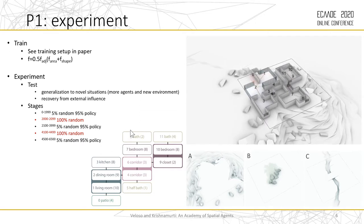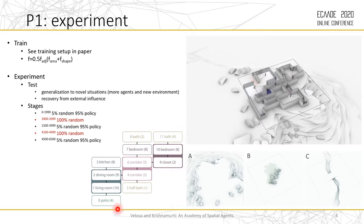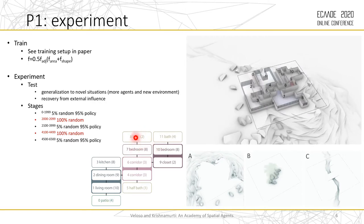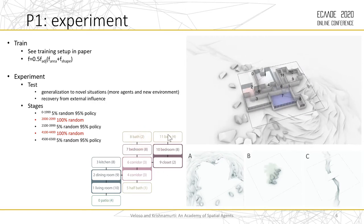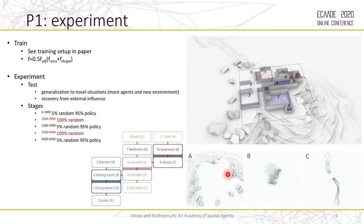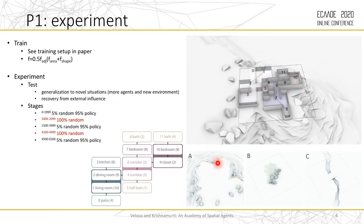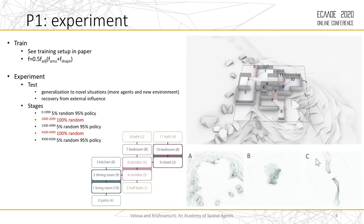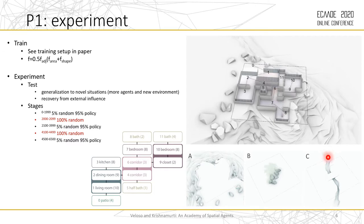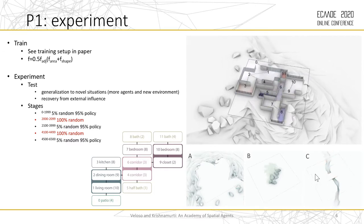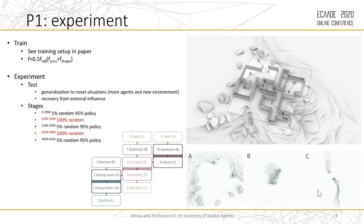In this case, the agents are representing a house. You can see there are 12 rooms with different adjacencies and areas. Each agent is one room. The agents are trying to create a layout inside this irregular boundary here. We also tested with environment C, which has a stream and a bridge. The agent tries to occupy both sides of this stream.